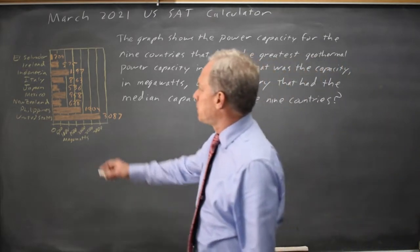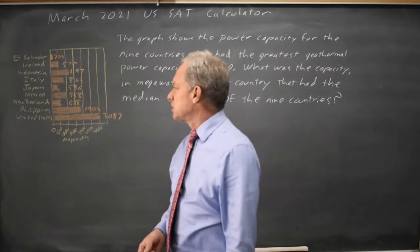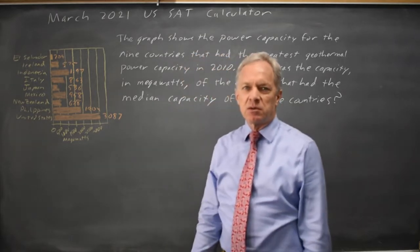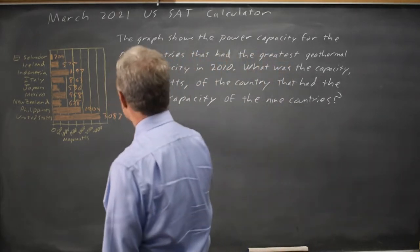College Board is asking for the median from a list of nine values. The median is the middle number when they're listed in order from smallest to largest. So let's sort these in order.